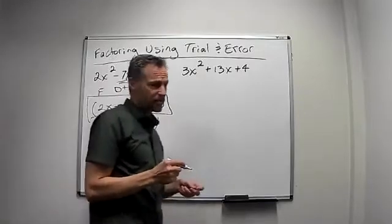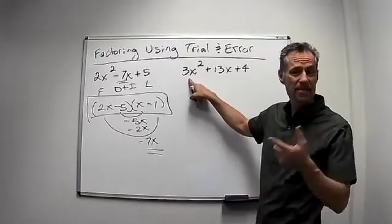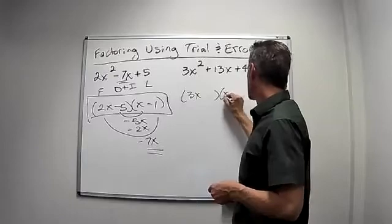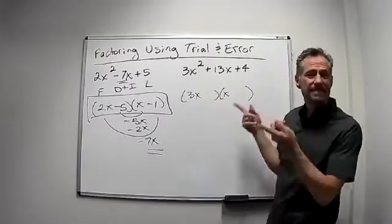Let's try something similar over here. We know they have to multiply to the 3x squared. So I know it has to be 3x times x. And if you'd rather put x times 3x, it doesn't matter. Same idea.